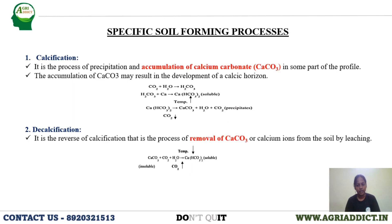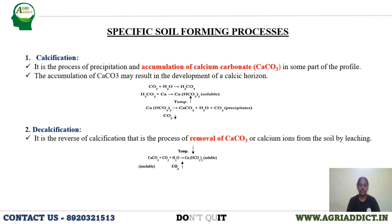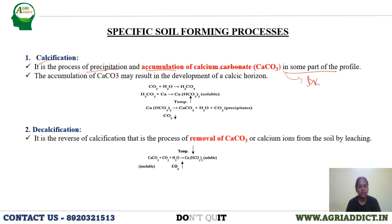Till now we saw basic and fundamental soil forming processes. Now we will see specific soil forming processes. The first specific process is calcification — the process of precipitation and accumulation of calcium carbonates in some part of the profile, usually in the B horizon, which is then called the BK horizon. The accumulation of calcium carbonate results in the formation of a calcic horizon.